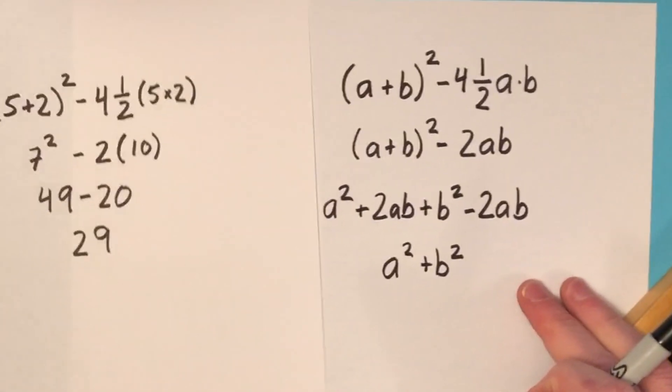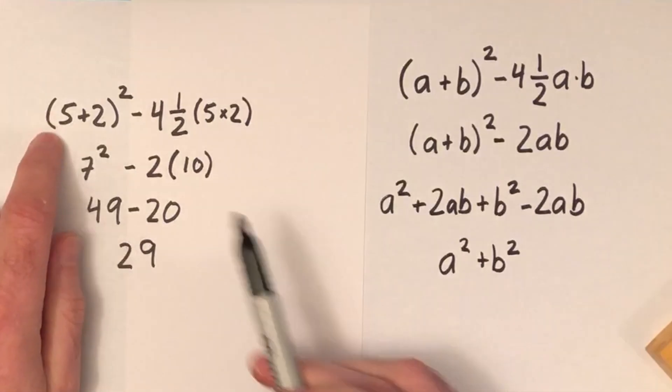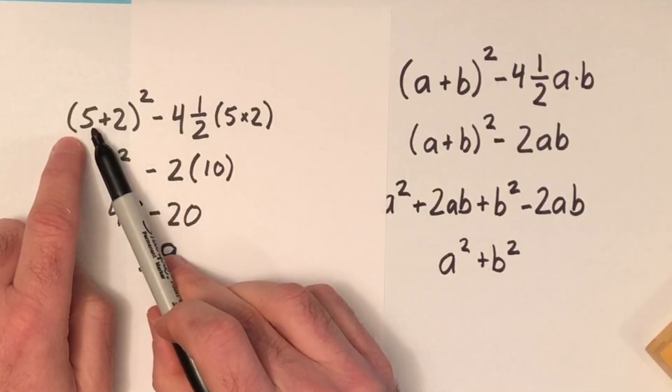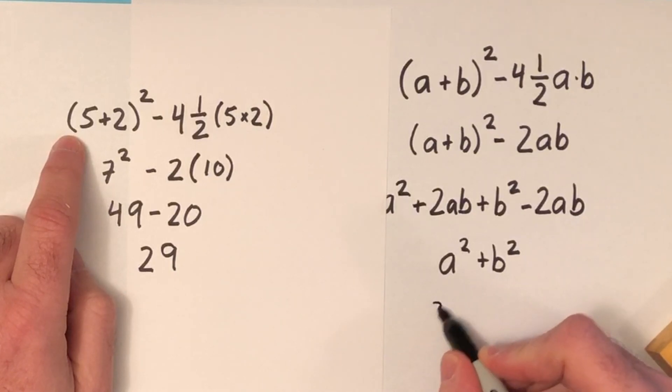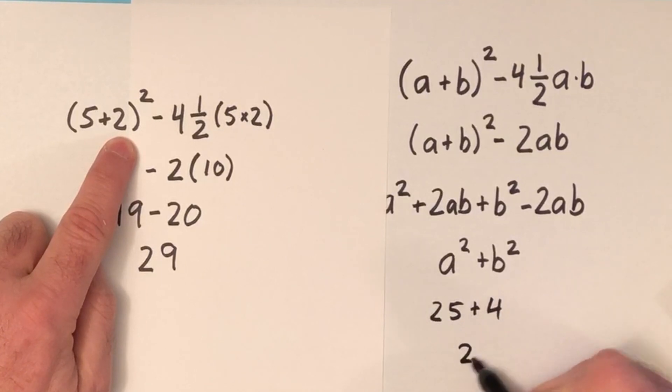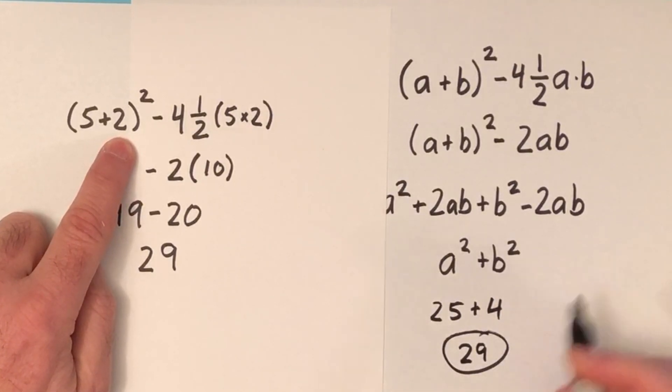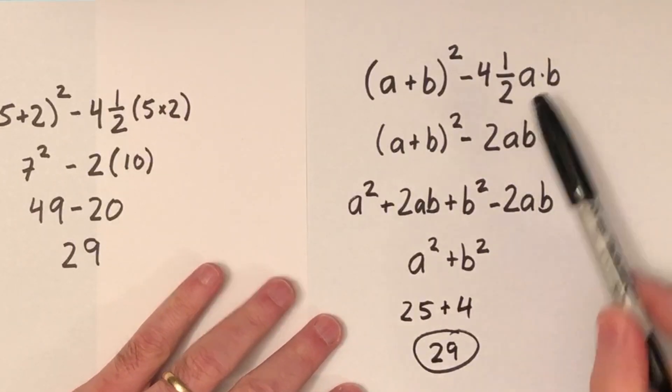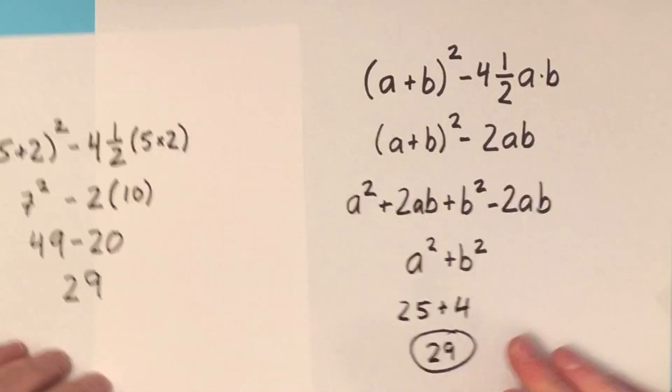So if we look back at our numerical example, we had side lengths of 5 and 2 for our right triangle. Well, if we just square 5, that gives us 25. And if we square the 2, that gives us 4. And there's our 29. So that's a much faster way of going through all this, because we understand that this process is going to happen every single time. And that's how we develop the formula.